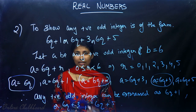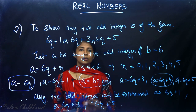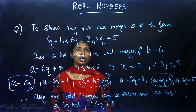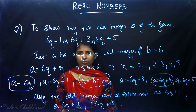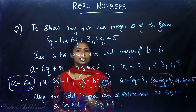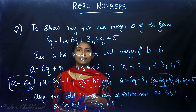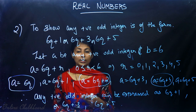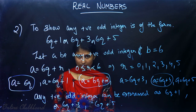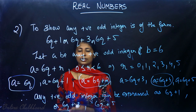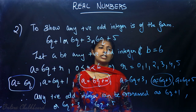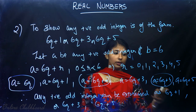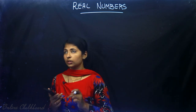Let's look at some examples. Take 19: it's an odd number; we can write it as 6×3 + 1 = 18 + 1 = 19. Take 23: 6×3 + 5 = 18 + 5 = 23. Take 27: 6×4 + 3 = 24 + 3 = 27. That means any positive odd integer can be written in the form 6q plus 1, 6q plus 3, or 6q plus 5.